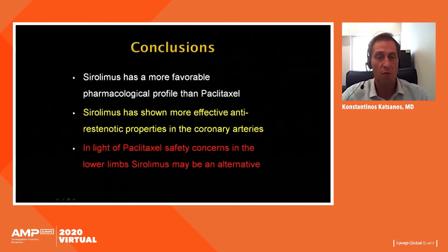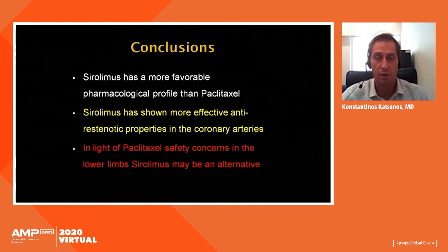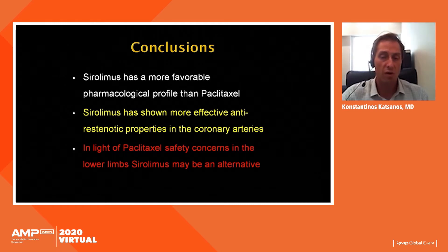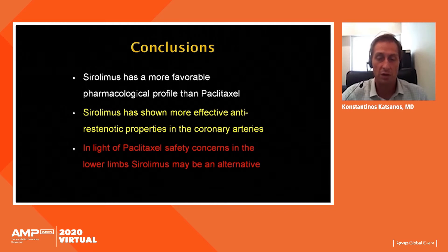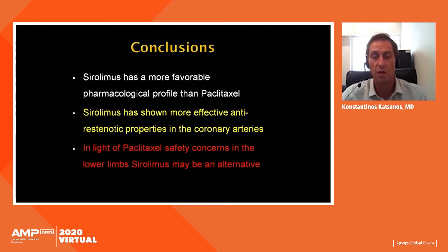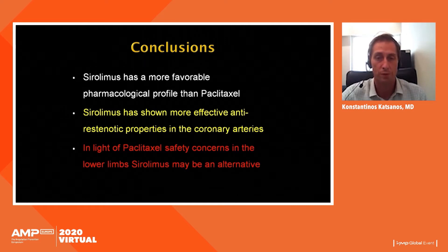In conclusion, sirolimus has a more favorable pharmacologic profile than paclitaxel. It has shown more effective anti-restenotic properties in the coronary arteries, and in light of recent paclitaxel safety concerns, it may be a reasonable alternative for the lower limbs. Thank you very much for your attention.